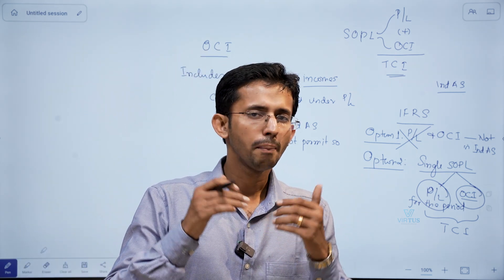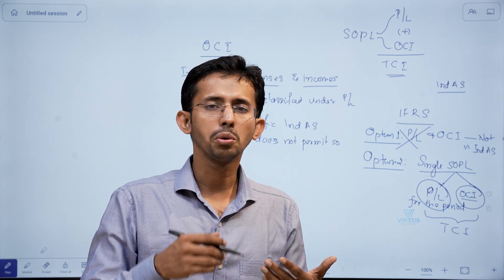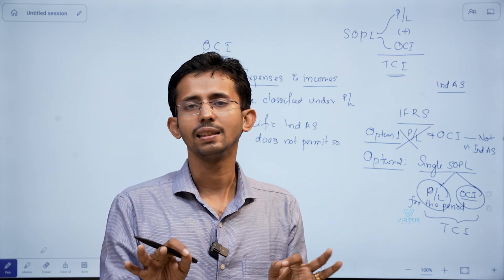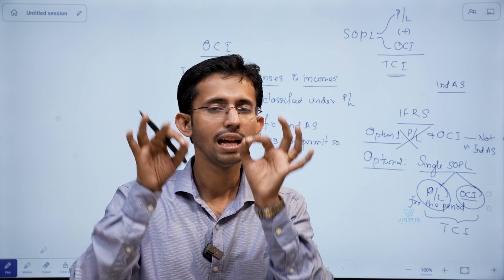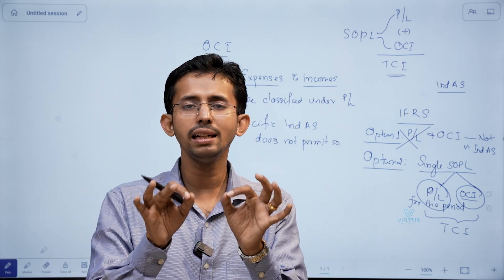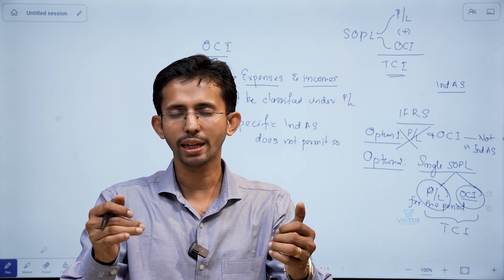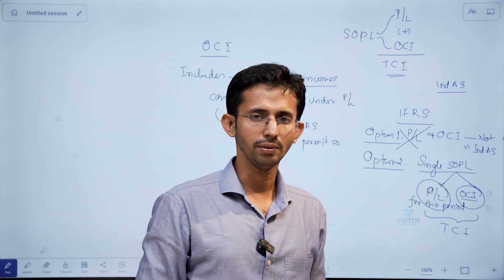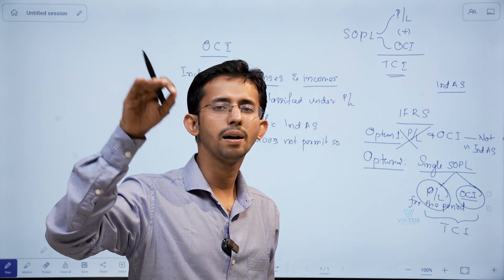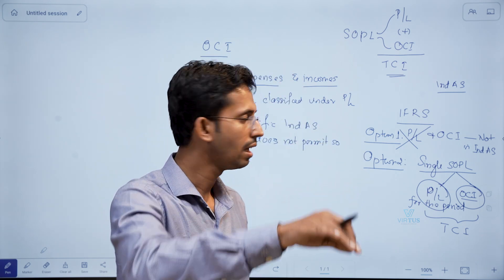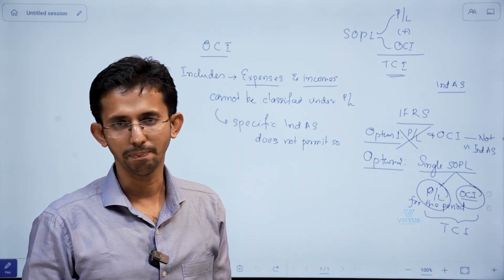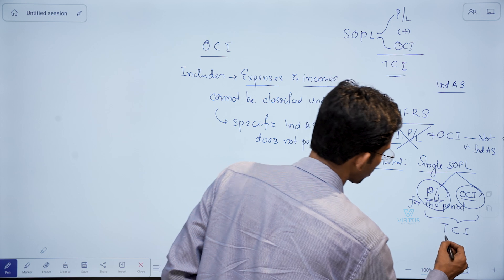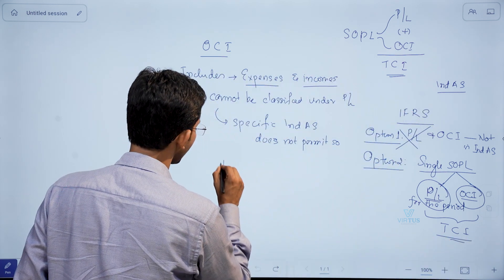This is one area where most students have confusion. OCI is nothing but some selected or specified items of expenses or incomes which are specified by various Ind AS standards — items that cannot be taken to the profit or loss for the period and should instead be shown separately under Other Comprehensive Income. Other Comprehensive Income plus your profit or loss for the period together is what is known as Total Comprehensive Income.